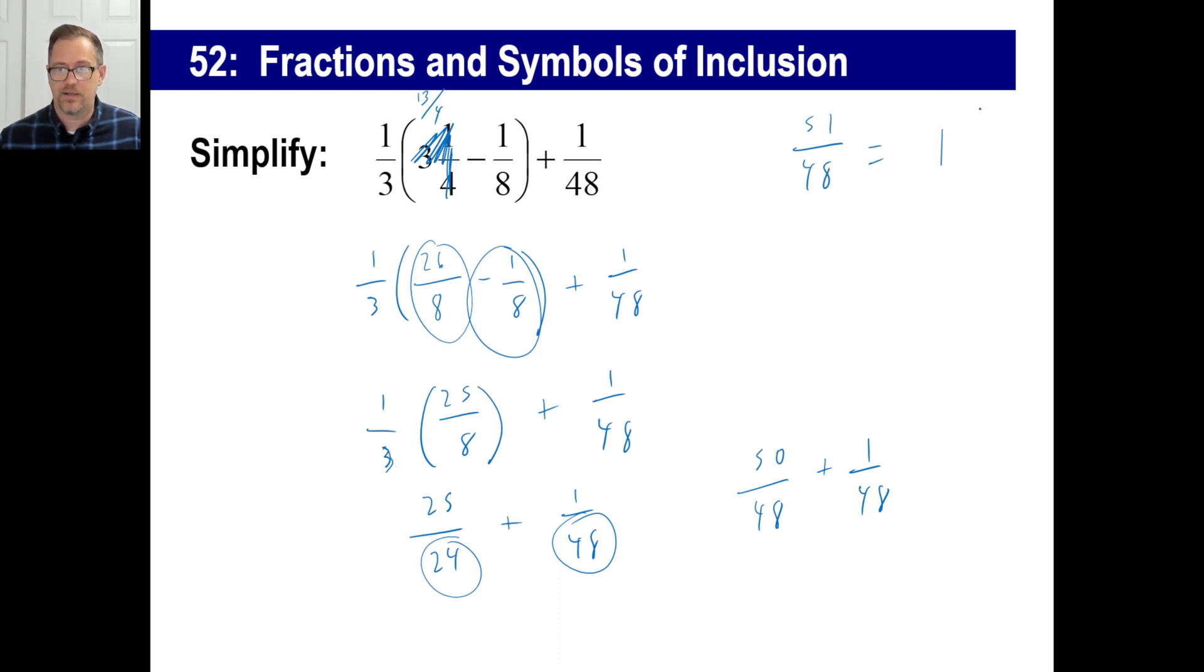Now, if we reduce that, that'll be the same thing as one and three forty-eighths. Three goes into three one time. Three goes into forty-eighths sixteen times. So that's going to be the final answer we get.